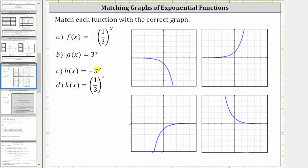We're going to have to match each exponential function with the correct graph. Let's first focus on g of x equals three raised to the power of x. Notice how the base b is three. Whenever we have an exponential function and the base is greater than one, we have an increasing function or exponential growth.